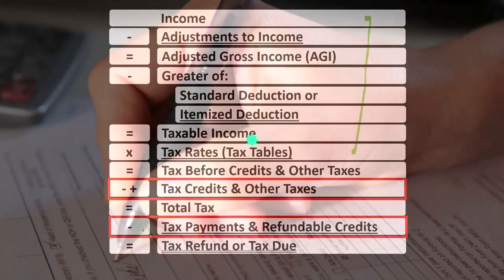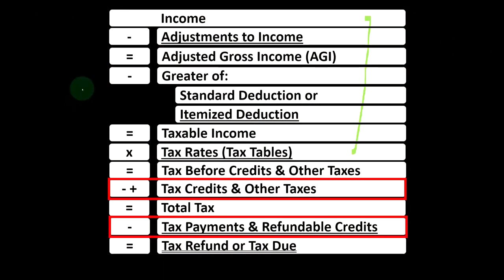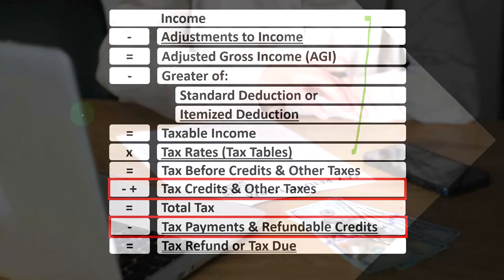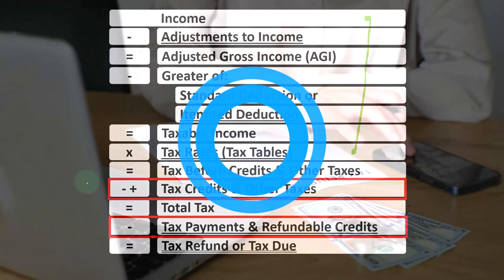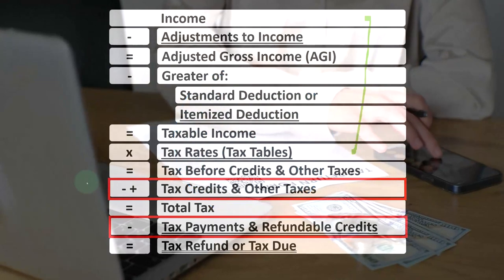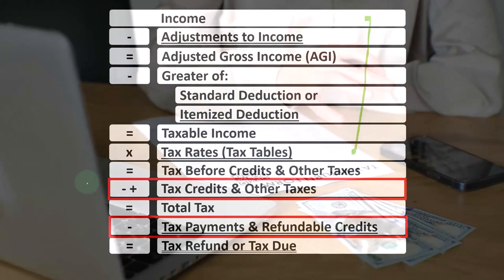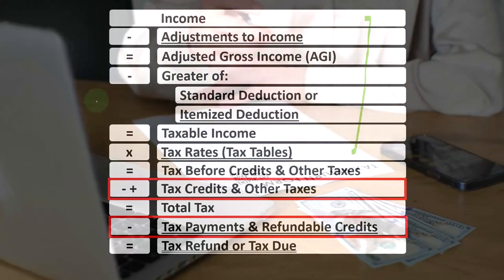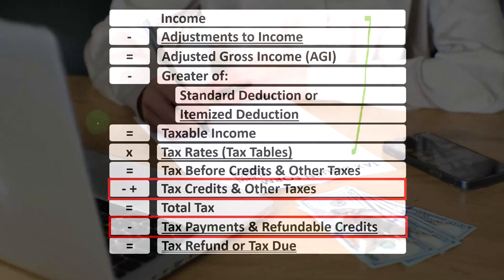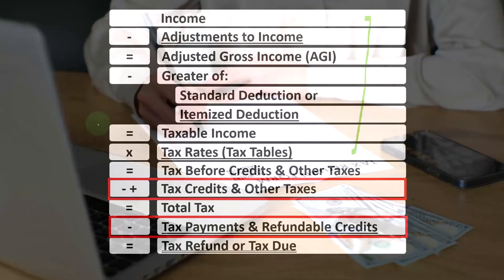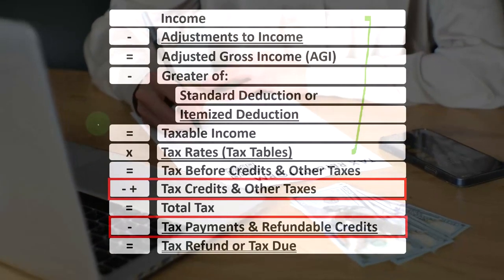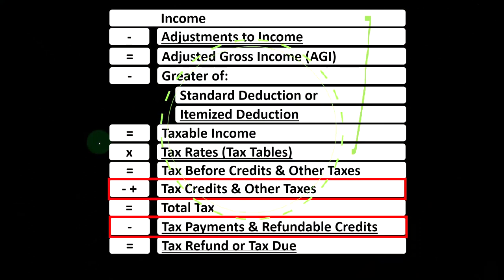Credits are similar to deductions in that we like them both, but if we can get a dollar credit versus a dollar deduction, we typically want the dollar credit because we get the full benefit of the dollar, as opposed to a deduction which only decreases or reduces the taxable income, the benefit being a function of what our tax rate is.